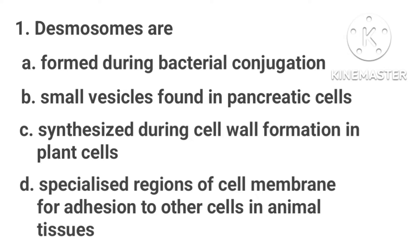Desmosomes are: Option A, formed during bacterial conjugation. Option B, small vesicles found in pancreatic cells. Option C, synthesized during cell formation in plant cells. Option D, specialized regions of cell membrane for adhesion to other cells in animal tissues.